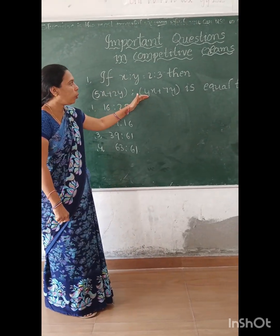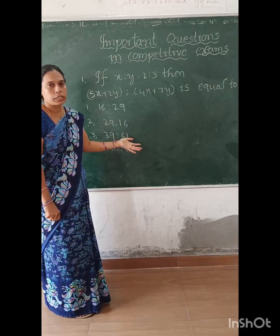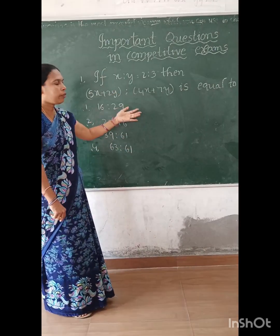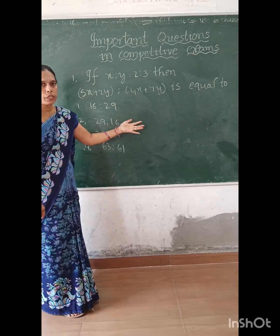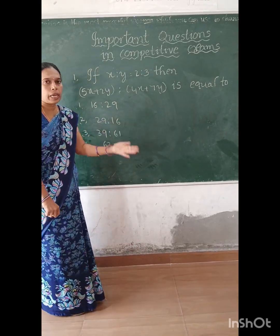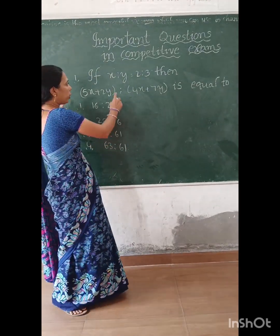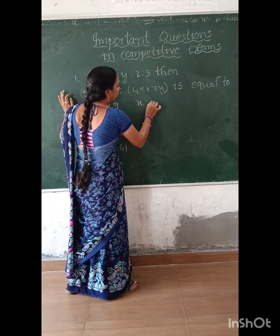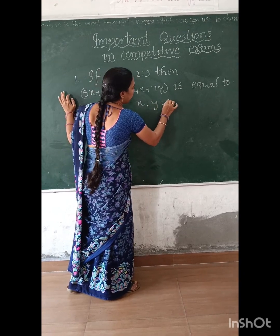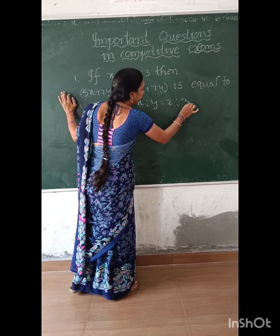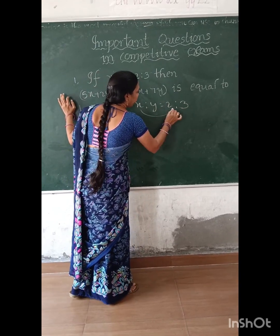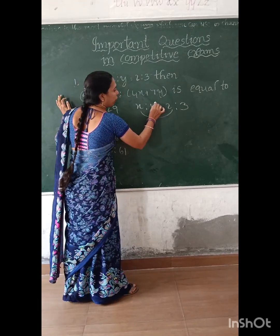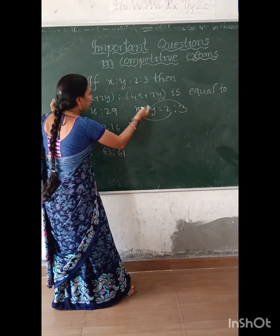If you come to this example, there are important questions. In this example, we have to do this. So x is to y — here x is 4 is to 2. Then x here is 2, y here is 3.